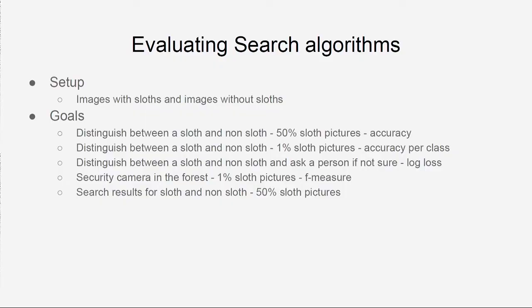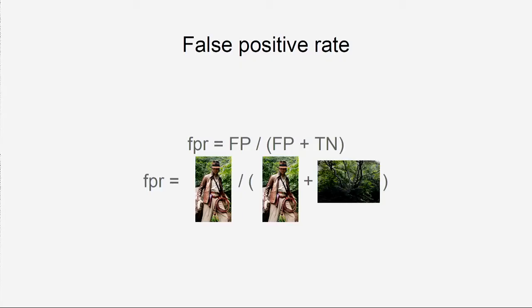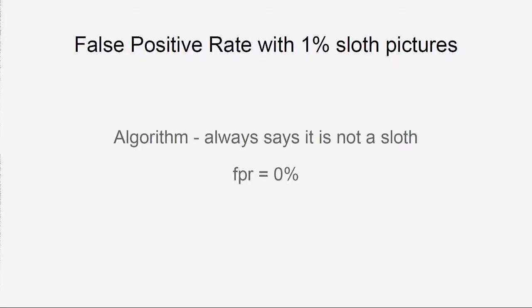Those were the classification metrics. Now let's talk about information retrieval or search metrics. If we want to create a search for slots and we know that 50% of our data are slot pictures, what could we do? Let's start with false positive rate — a metric that tells us how many times we got it wrong: how many pictures that were not slots we said were slots. It's a negative metric, so we want to minimize it — 0% is perfect. But again, it's easy to game: always say there is no slot and you can never be wrong.